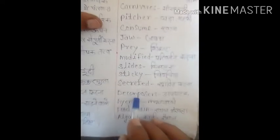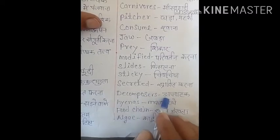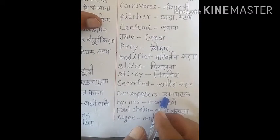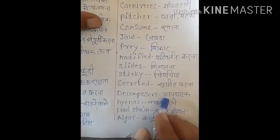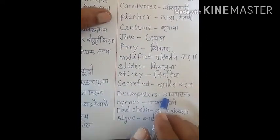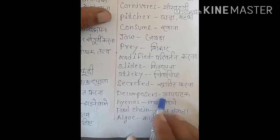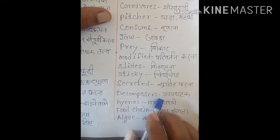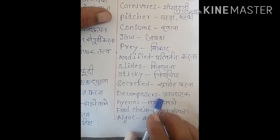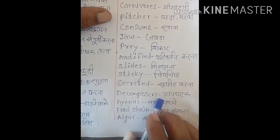Next word is 'decomposers', D-E-C-O-M-P-O-S-E-R-S. Decomposers means 'apghatak'. There are some animals that derive food from dead and decaying plants and animals — they decompose the decaying matter to obtain their food. They are called decomposers. Ecosystem mein kuch janvar aise hain jo apna food dead and decaying plants aur animals se lete hain. So decompose karte hain decaying matter ko — indirectly wo ecosystem mein help karte hain.